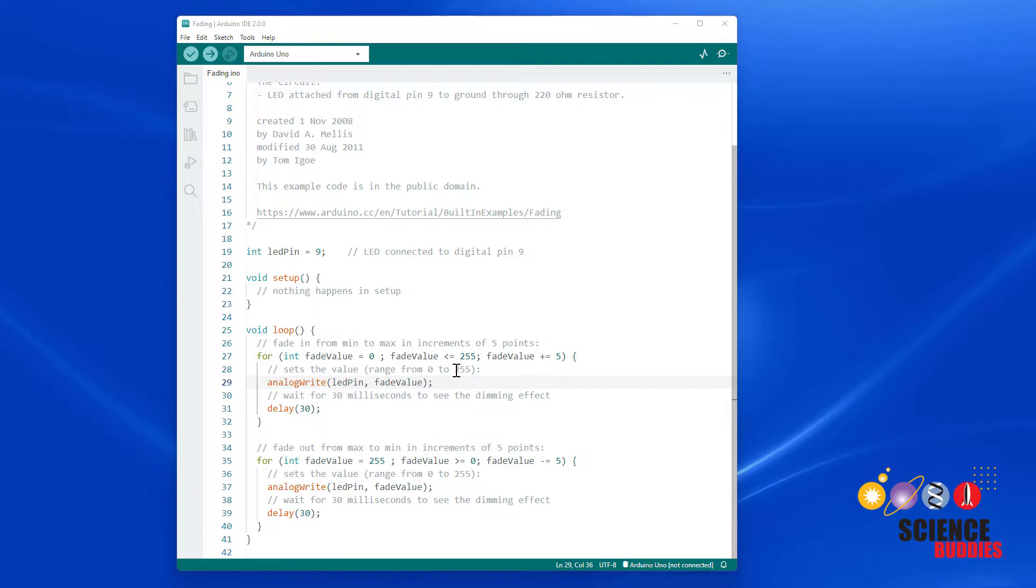The bigger that number, the brighter the LED will be. So remember how the for loop works, we are going to start off with a value of zero for the fade value variable so the LED will be completely off. And then each time we increase it by an increment of five so the LED will get a little brighter on each iteration through the loop until we get up to full brightness at 255.